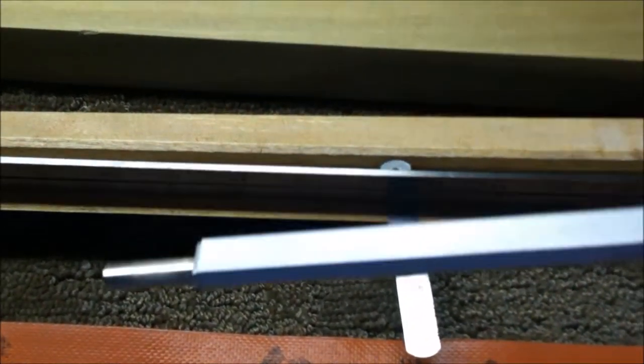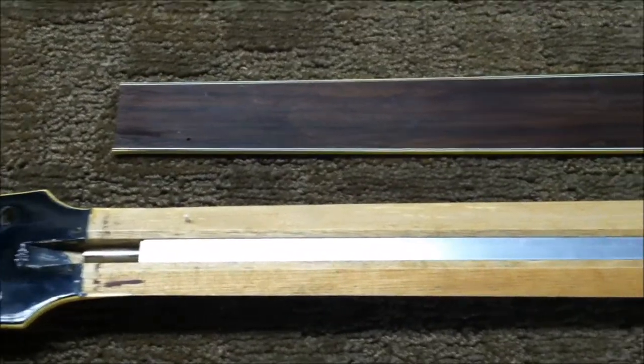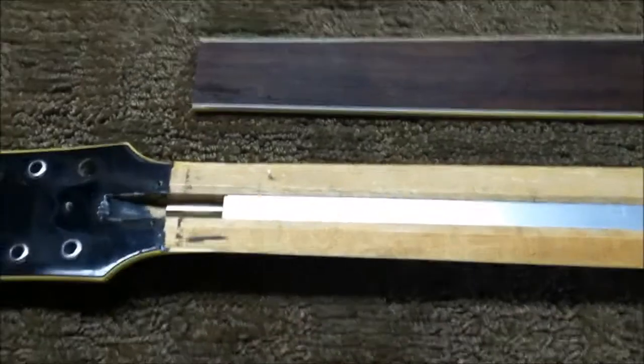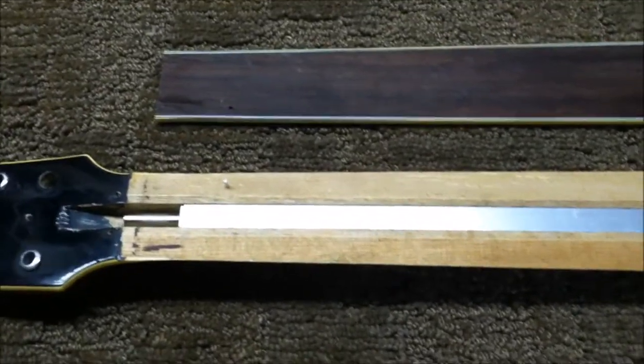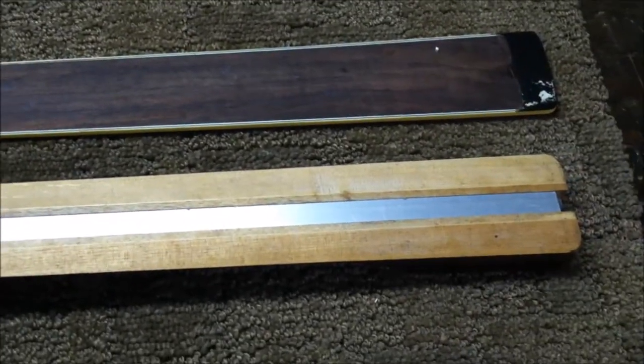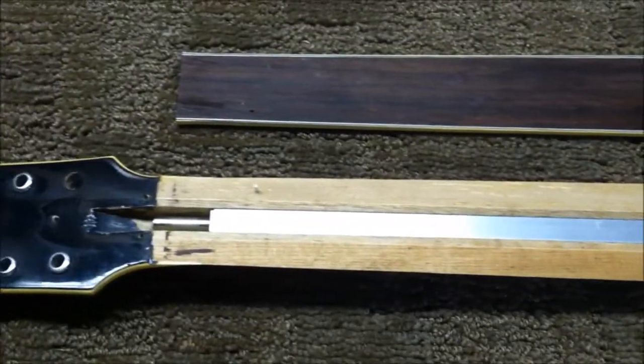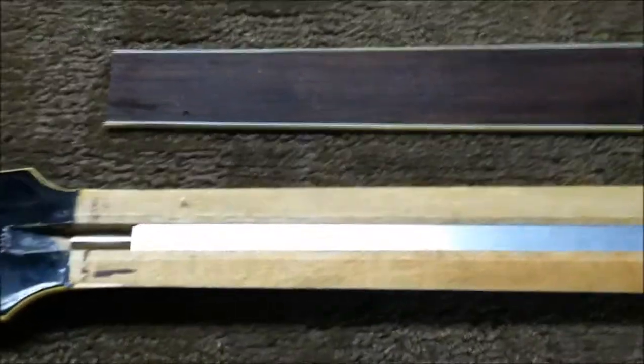I'm about ready to glue up the fingerboard. I've taken all of the twist out of that neck. It still has a little bit of an under bow, but I'm not worried. It's at least even on both sides and I can take care of what's left while gluing up the fingerboard.